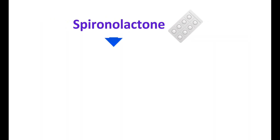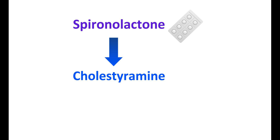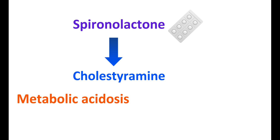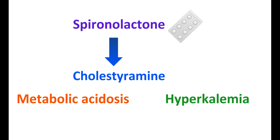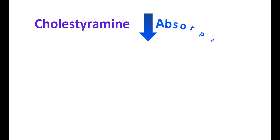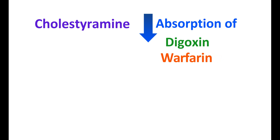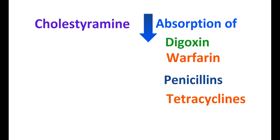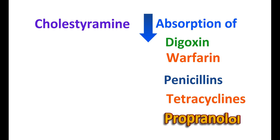Spironolactone, a potassium-sparing diuretic that increases diuresis while reducing potassium excretion, can also interact with cholestyramine. When combined, metabolic acidosis is more pronounced and it may also lead to hyperkalemia, so cholestyramine should be used carefully alongside spironolactone. Cholestyramine can also reduce absorption of many lipid-soluble drugs and ionic acids, including digoxin, warfarin, penicillins, tetracyclines, and beta-blockers like propranolol. Therefore, these drugs should not be administered simultaneously with cholestyramine.